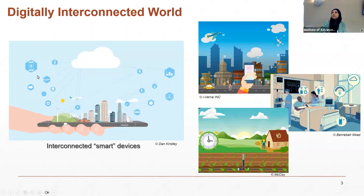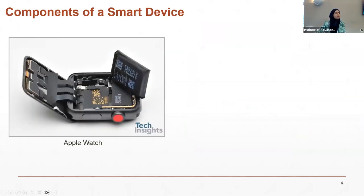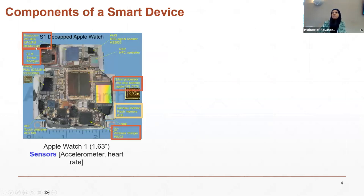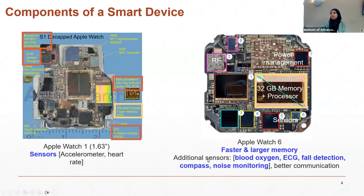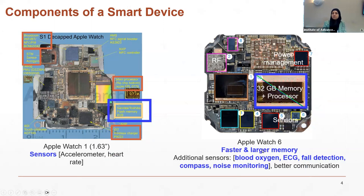If we take a closer look at any of these smart devices, we can see they include several key components. For example, if we disassemble an Apple Watch, you can see it includes a communication unit, sensors, processor, memory, and a power unit. As we move to advanced versions like Apple Watch Series 6, we introduce more powerful sensors and better communication, all of which require faster and higher-capacity memory devices. The progress in memory devices has been a key technology enabler.